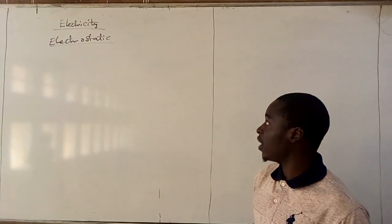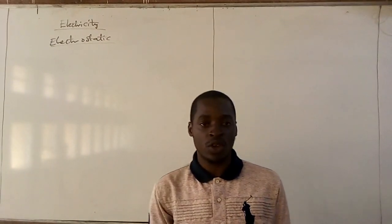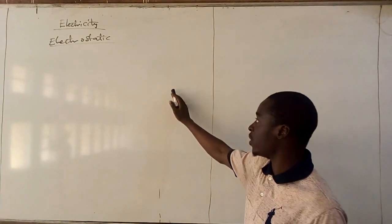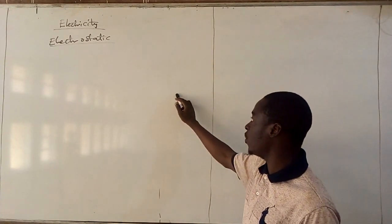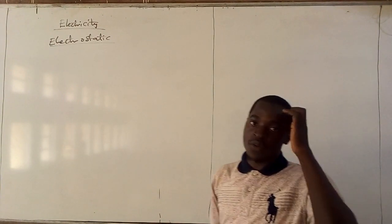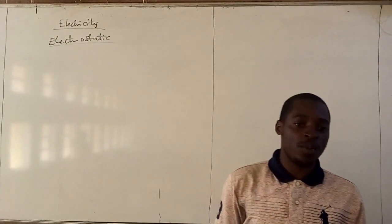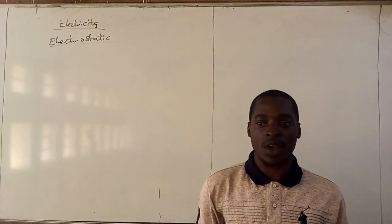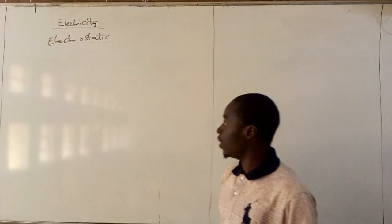These charges are going to transfer to each other. Any object we normally have is a neutral object. This neutral object contains both positive and negative charges. So if we rub two things together, charges can be produced. There are different ways in which you can produce charges, and we are going to talk about that later.